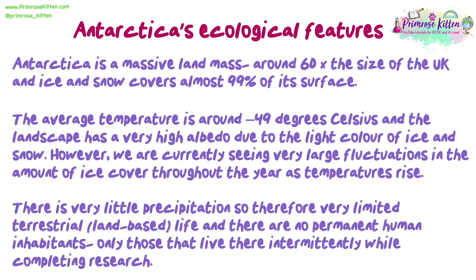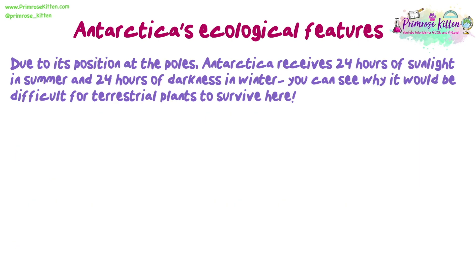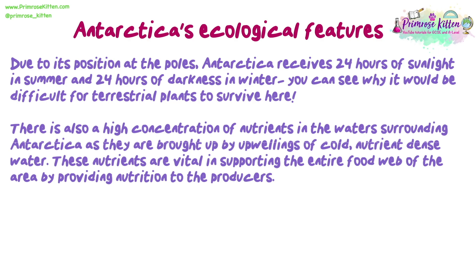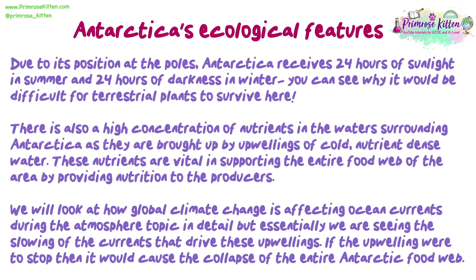There is very little precipitation, so therefore very limited terrestrial, land-based life, and there are no permanent human inhabitants, only those that live there intermittently while completing research. Due to its position at the poles, Antarctica receives 24 hours of sunlight in summer and 24 hours of darkness in winter, which makes it very difficult for terrestrial plants to survive. There is also a high concentration of nutrients in the waters surrounding Antarctica, brought up by the upwellings of cold, nutrient-dense water. These nutrients are vital in supporting the entire food web by providing nutrition to the producers. We are seeing the slowing of the currents that drive these upwellings, and if the upwelling were to stop, it would cause the collapse of the entire Antarctic food web.